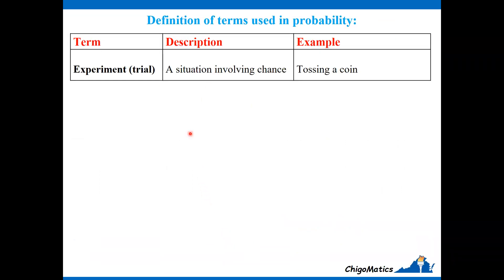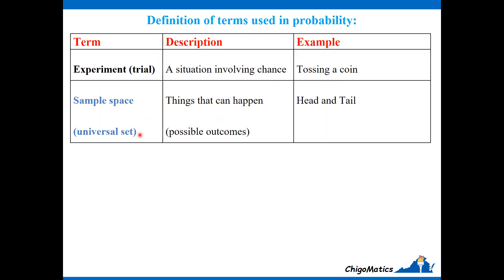Now we define the terms using the example we have seen. The term experiment or trial is a situation involving chance. Tossing a coin is an experiment because we don't know whether the coin will land heads or tails. The sample space, or universal set, refers to all things that can happen — the possible outcomes. Head or tail would be an example of a sample space for a coin.